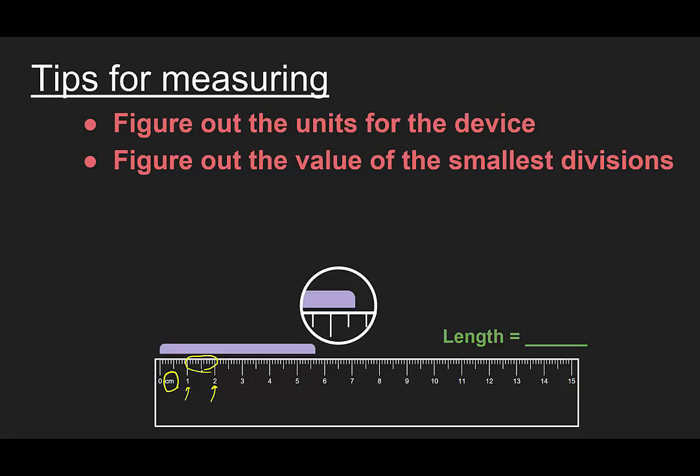When we record this, we're going to record those digits as tenths of a centimeter or .1 centimeters. At times you may pick up an instrument that only has five of those lines, which is a little confusing. That means each line represents two tenths of a centimeter.